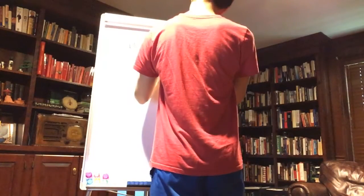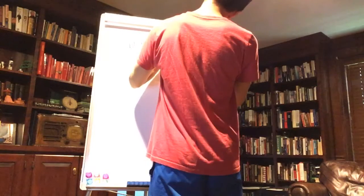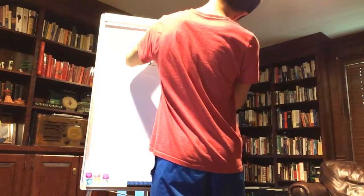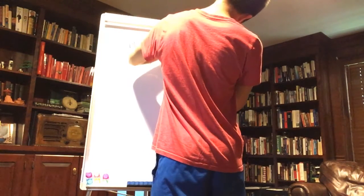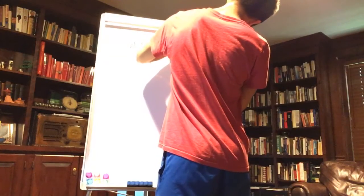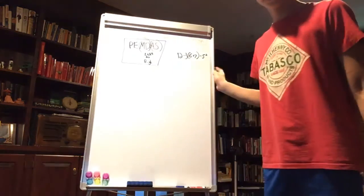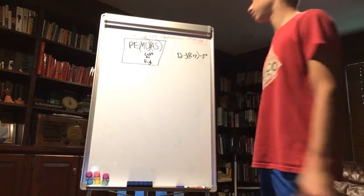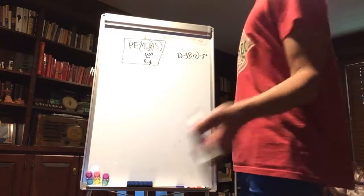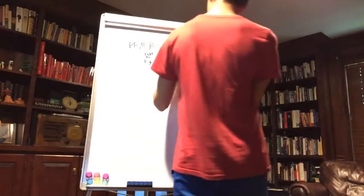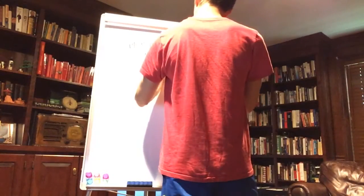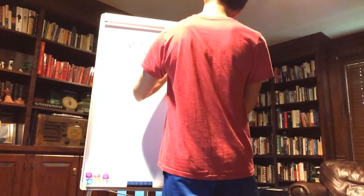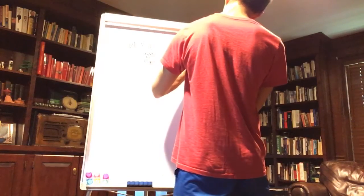Here we have 12 minus 3 times 6 minus 5 squared. This one is a little bit trickier. First thing though, you're still going to be doing parentheses. 6 plus 7 is 13. So now we have 12 minus 3 times 13 minus 5 squared.